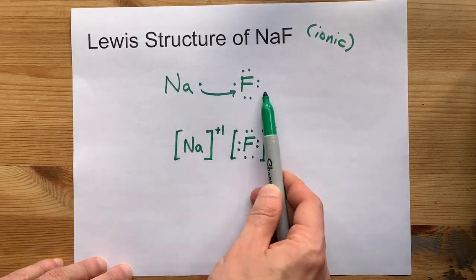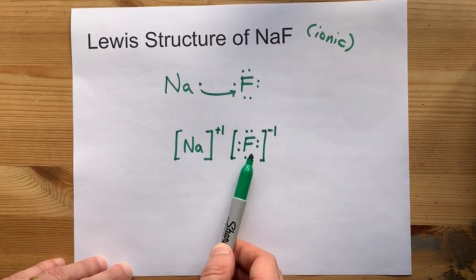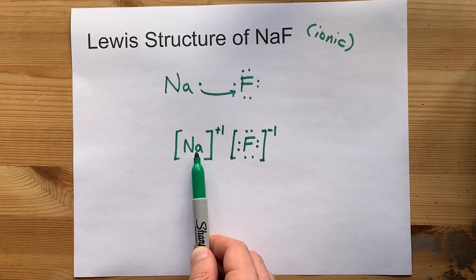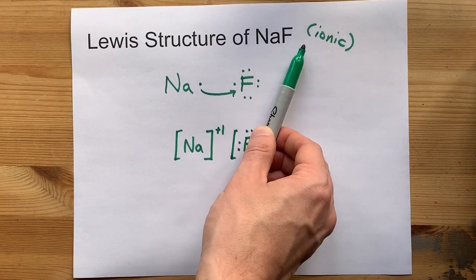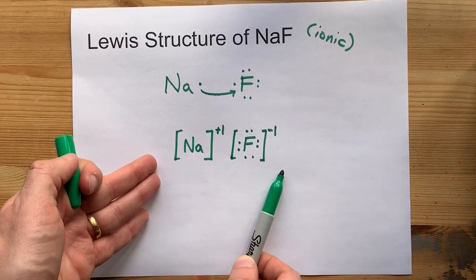We only need one of each of these atoms to give this a full octet and to give this an empty outer shell. So this is it. One and one. NaF. Lewis structure complete.